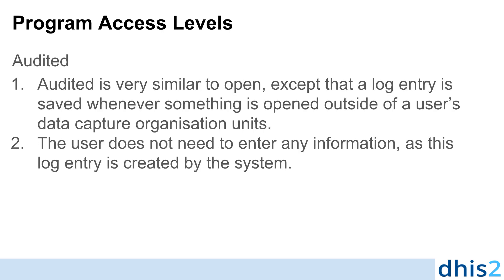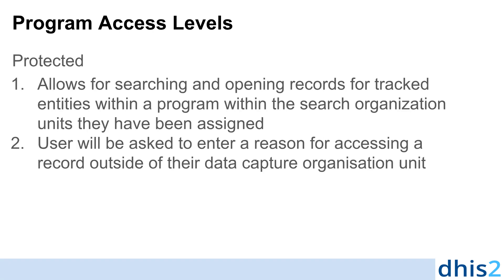The audited level of program access is very similar to open. However, there is now a log entry that is saved whenever something is opened outside of a user's data capture organization unit. The user does not need to enter any information, as this log entry is created by the system. The protected level of access allows for searching and opening records for tracked entities within a program within the search organization units that they have been assigned. However, they will be asked to enter a reason for accessing a record outside of their data capture organization unit each time this action is performed.